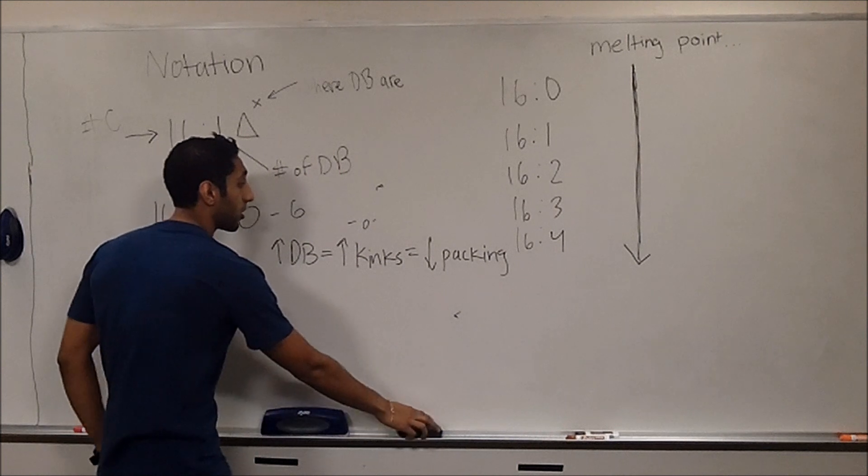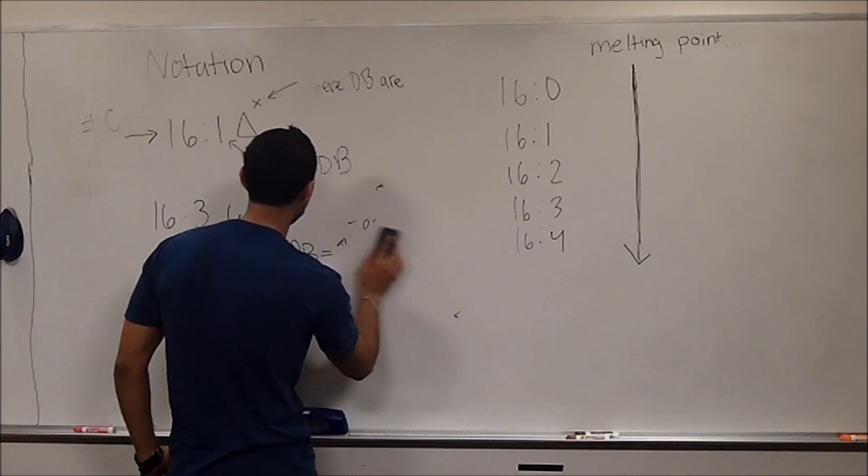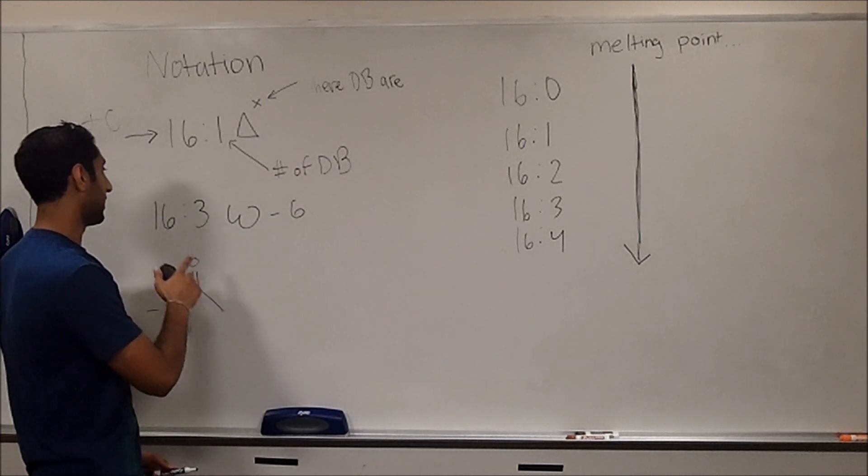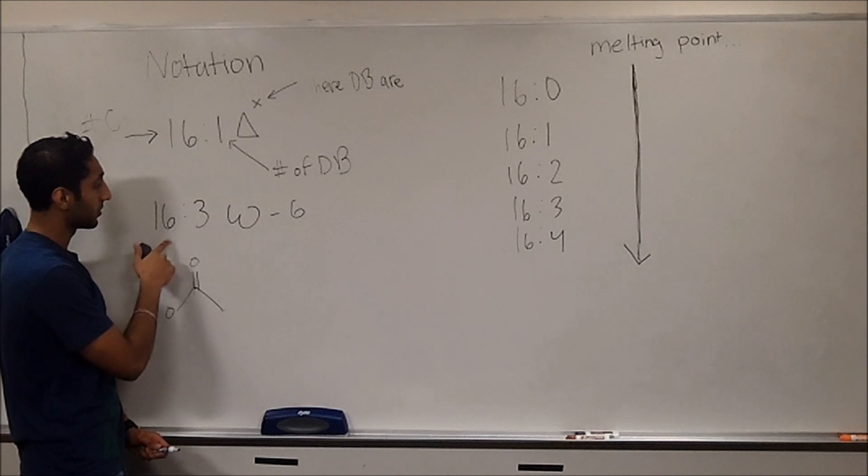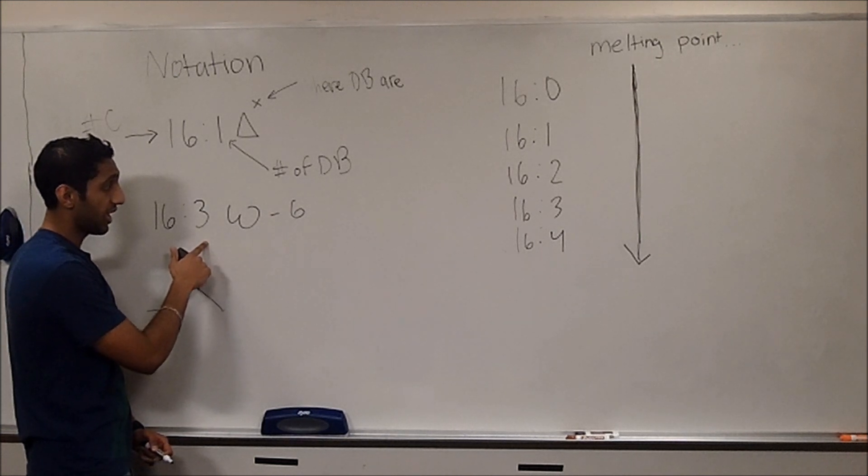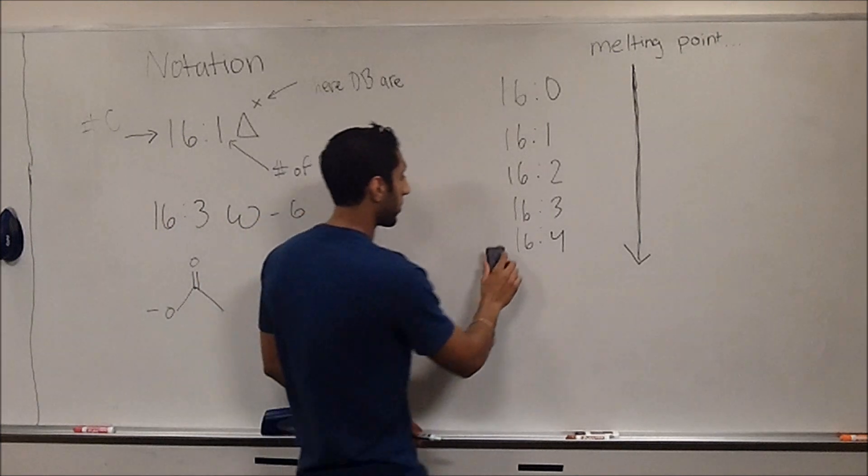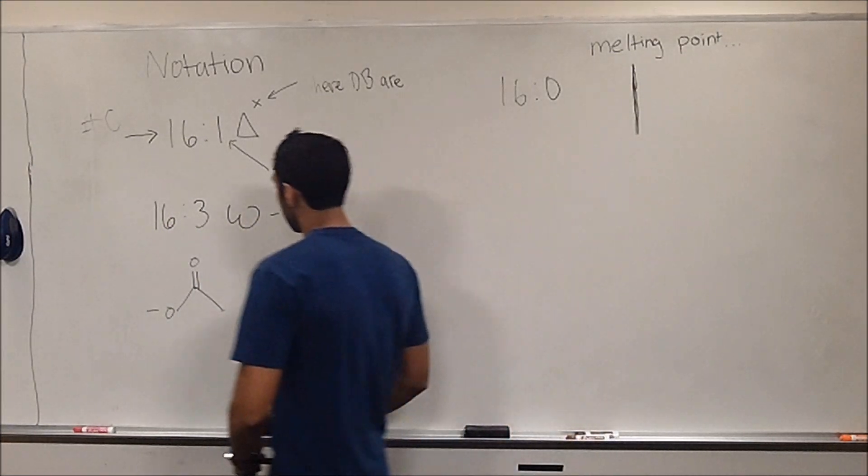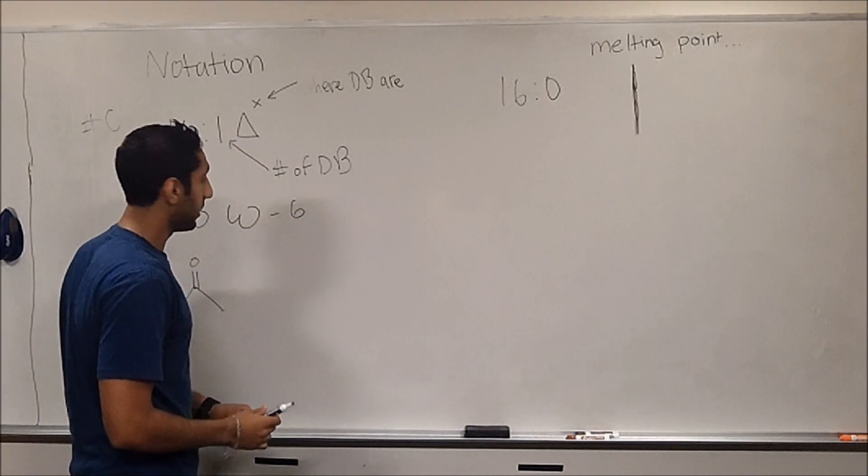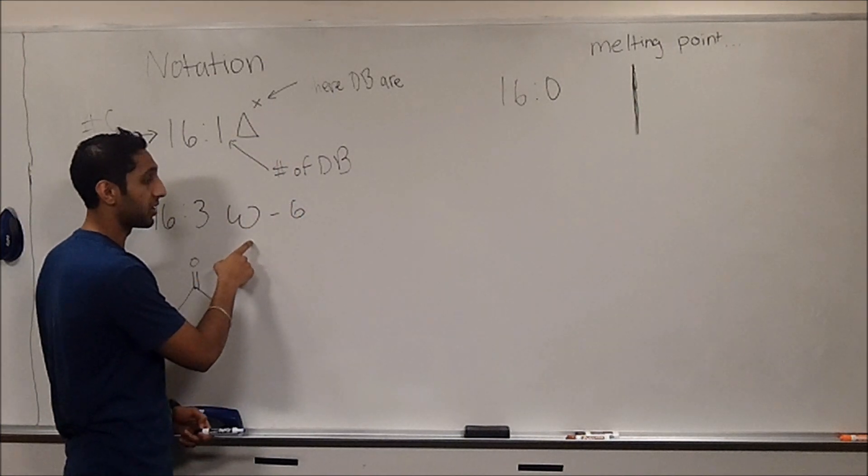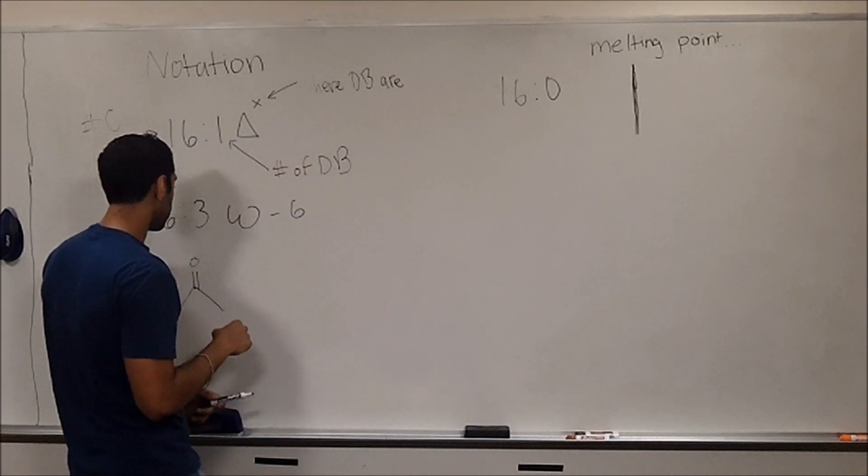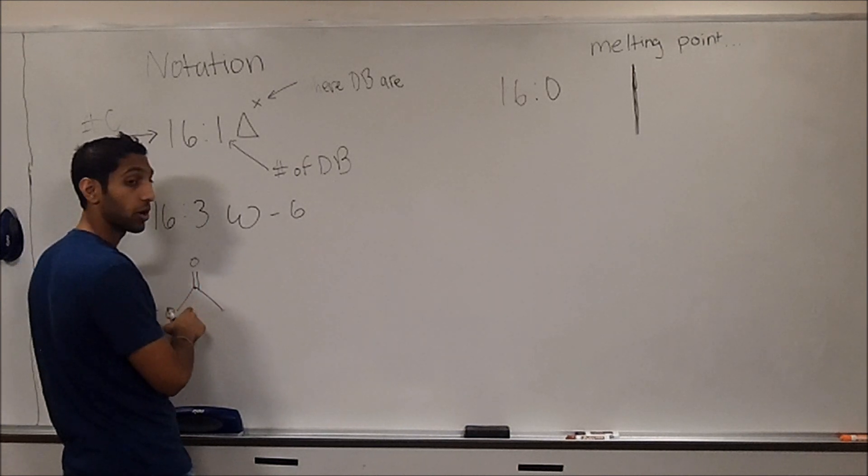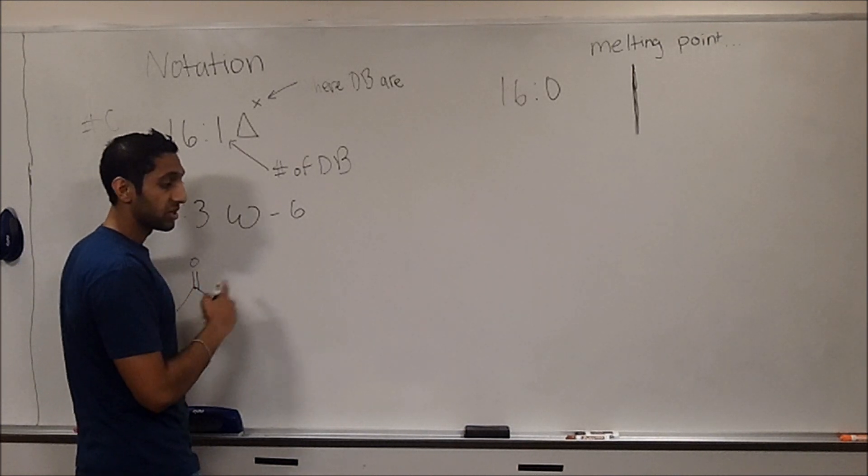Now, the second part of the question asks about omega fatty acids. In particular, what would it look like for a 16-carbon fatty acid with three double bonds as an omega-6? An omega-6 fatty acid generally specifies the first double bond going from the reverse direction. So instead of numbering it traditionally for the double bonds starting with a carboxyl group, you'll go in the opposite direction.